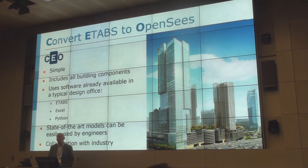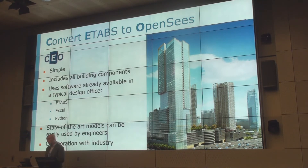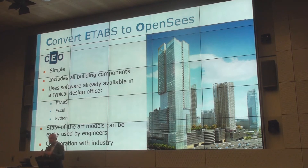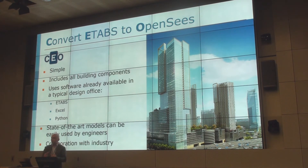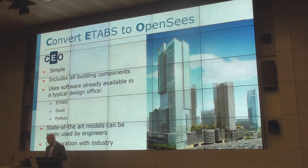In summary, we have this tool that is very simple, includes all building components one might need to model a building, and uses all the software already available in a design office: ETABS, Excel, and Python — which is free. This makes all the state-of-the-art models for walls, beams, materials, whatever it is, available to engineers. The conversion process is pretty quick and straightforward. I'd like to invite anyone from industry who's interested to try this — we can talk and work together. Let's try to model some real buildings; we're tired of these archetypes that are all perfect and square.